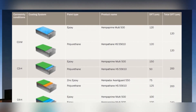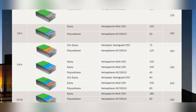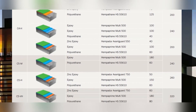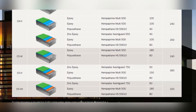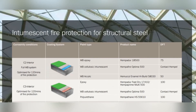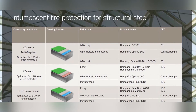The table below shows corrosion categories and environmental examples for both exterior and interior conditions, along with corrosion protection for steel structures. Corrosion conditions, coating systems, paint type, product name from Hempel Paints, and DFT in micrometers are presented. An additional table shows intumescent fire protection for steel structures with corresponding corrosive conditions, coating systems, paint types, product names, and DFT values.